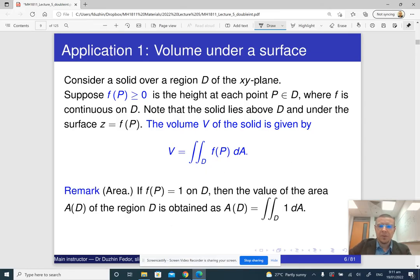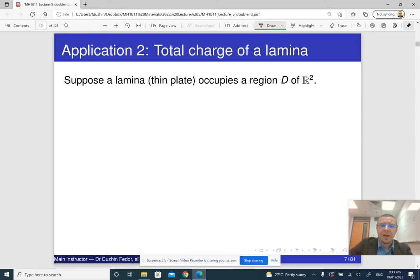Sometimes it looks a bit strange, but sometimes if we integrate the constant one, then of course we still get the volume, but if we integrate the constant one, then essentially we just get the area of the region D. I mean, of course, in order to compute areas, we can just use single integrals, but sometimes it is just more convenient to use double integrals. It looks surprising and counterintuitive, but it is.